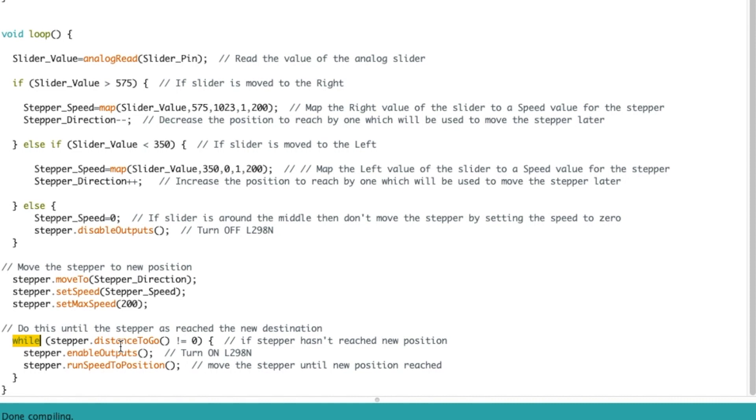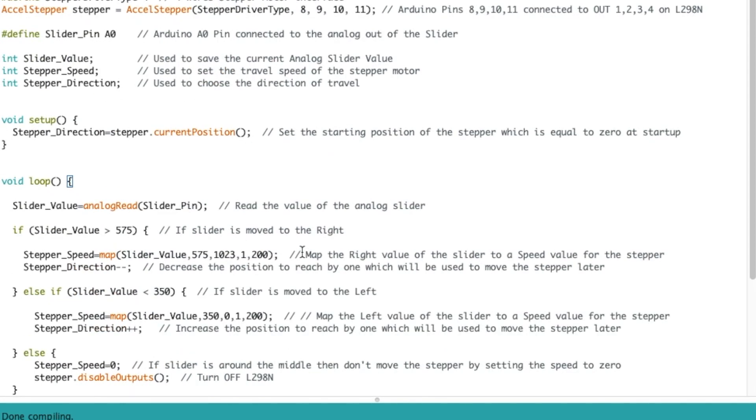If we didn't use that, we could move the analog slider back and forth. And the AccelStepper would need to catch up every time because it hasn't reached the destination yet. So that's why we're using a while loop here. Then we're enabling the outputs, meaning turning on the L298. And we'll run speed to that new position. And it will do this while until it reaches that position. And that's it. So then it goes back here, reads the analog and does it all over again. So there you go. That's the whole code. So now I'm going to upload that and let's go test it out.